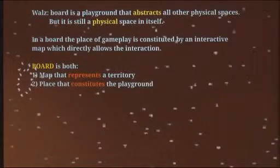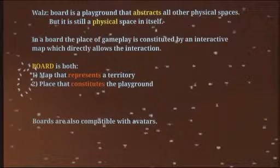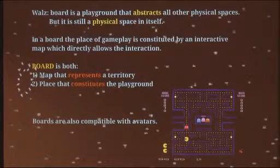According to Wolf, a board is a playground that abstracts all other physical spaces, but it remains a physical space in itself. In a board, a place of gameplay is constituted by an interactive map which directly follows the interaction. So a board is both a map that represents a territory and a place that constitutes the playground where the player can have experiences. Boards are also compatible with avatars, like in Pac-Man. We will see many different board types.